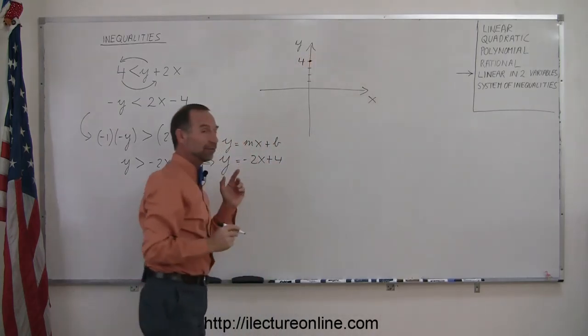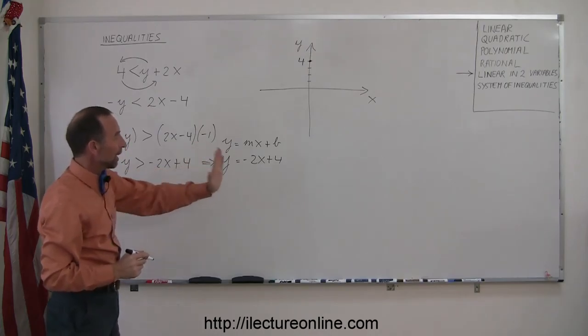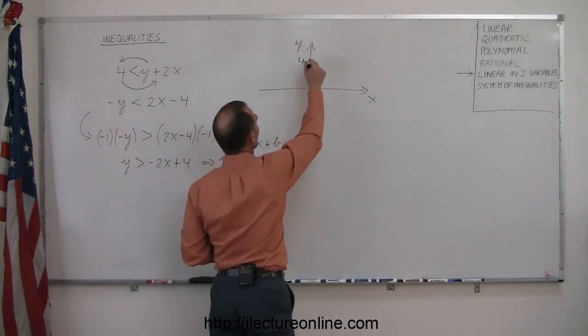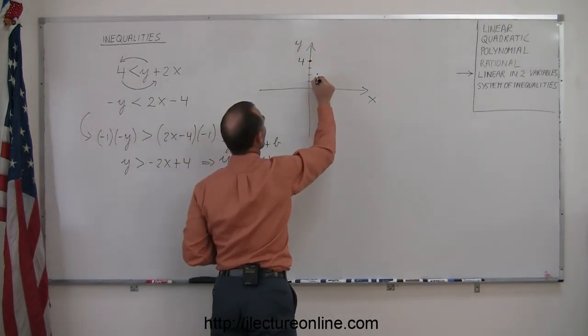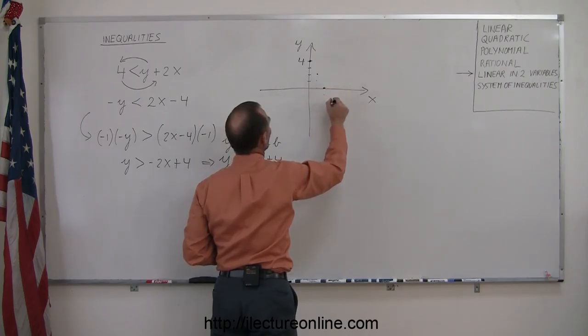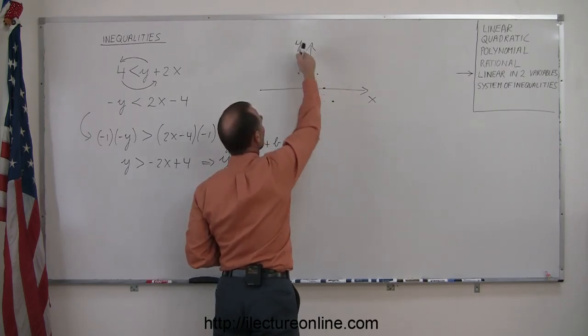So find the point y equals positive 4 right there. And the slope is a negative 2, that means you fall 2 for every run of 1. So go down 2, go over 1, go down 2, go over 1, go down 2, go over 1. Notice that all those points fall in a straight line.